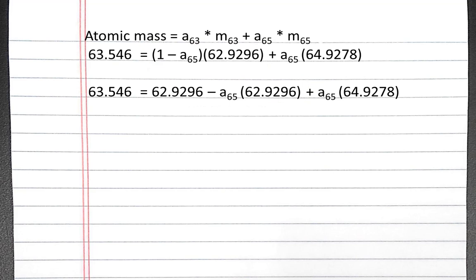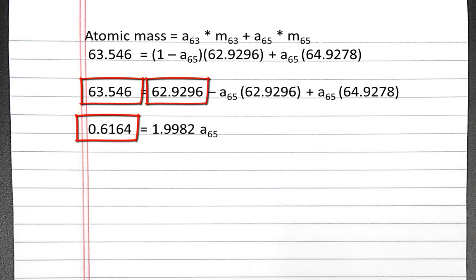Then we can group like terms on each side. So we'll take 62.546 subtract 62.9296, and we'll have 0.6164 on the left.